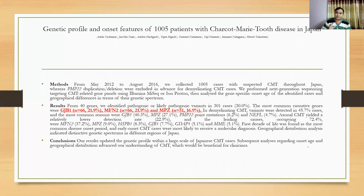Looking at the genetic profile of patients with Charcot-Marie-Tooth disease, after excluding peripheral myelin protein 22 (PMP22), the other common mutations that occur in CMT are GJB1, MFN1, and MPZ. We need to know about these findings because when evaluating a patient with genetic neuropathy, we have to assess these specific mutations.